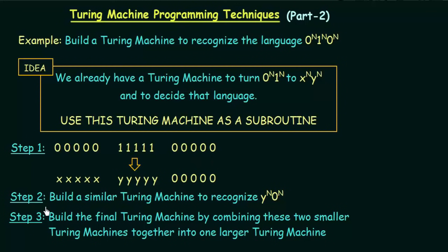In step 2, we will build a similar Turing machine to recognize y^n 0^n. What that means is we will now consider the second and the third parts of the string. In the second part we have y's and in the third part we have zeros. So you can build a similar Turing machine which will recognize y^n 0^n, because we have y's followed by zeros.